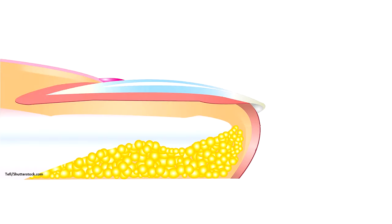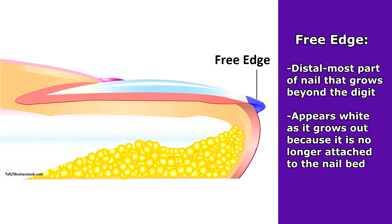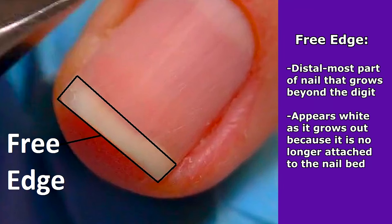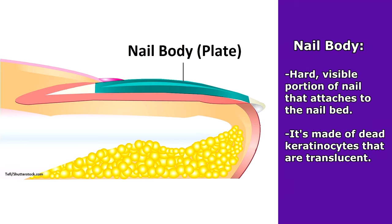Now let's take a look at the anatomy of the nail unit, starting with the nail itself. The free edge is the distal-most part of the nail that you have to trim with fingernail clippers, and it often has a whitish appearance as it grows out, because this part of the nail is no longer attached to the underlying nail bed, which is what actually gives the nail body its pinkish color. The nail body makes up that hard, visible portion of the fingernail that attaches to the underlying nail bed, and it's made of dead keratinocytes that are translucent, allowing the color of that underlying tissue to shine through.